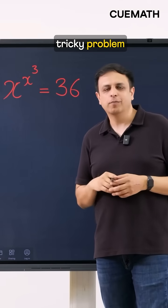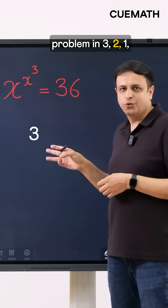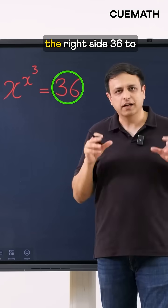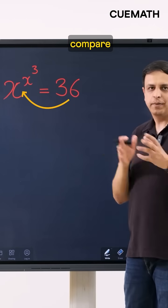This is a very tricky problem involving exponents and by giving it a shot I will solve this problem in 3, 2, 1 and here we go. So my approach will be to do a clever manipulation of the right side 36 to write it in this form and then we just compare the values for x.